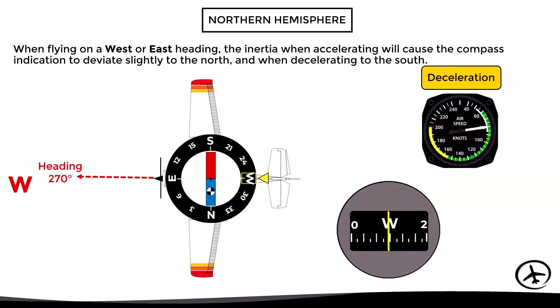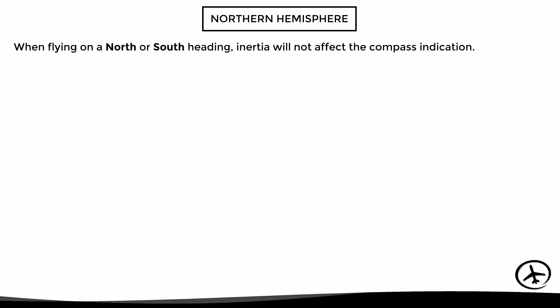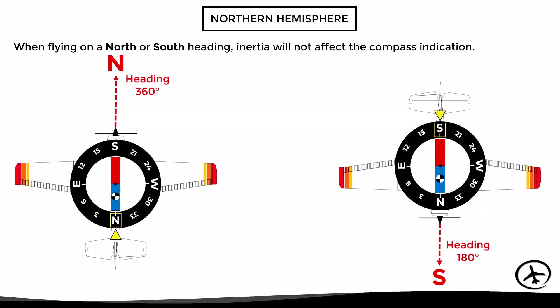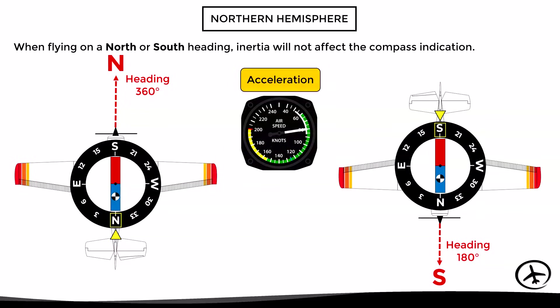So far we have seen what happens when the aircraft flies on a west or east heading. But what happens if the aircraft flies on a north or south heading? In this case, inertia will not affect the heading indication — there will be no errors when accelerating or decelerating. This happens because the center of gravity, the pivot point, and the inertia are all aligned with each other, so the magnet has no tendency to rotate to either side.